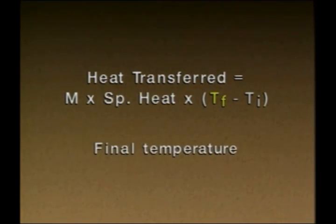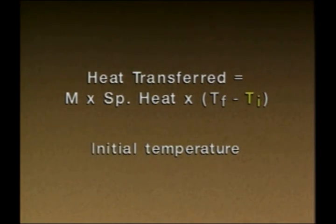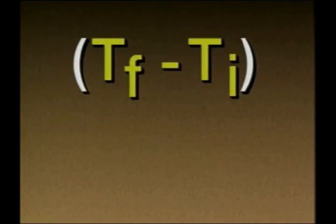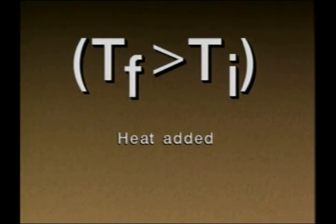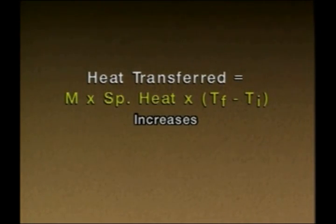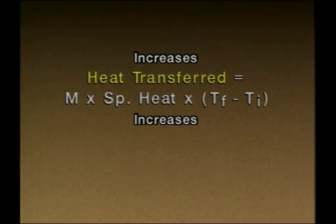The formula also includes the difference between the final temperature of the substance, Tf, and the initial temperature, Ti. The difference between the final and initial temperatures represents the temperature change. If the final temperature is greater than the initial temperature, heat was added to the substance; if the final temperature is less than the initial temperature, heat was removed. If any of these factors increases, the amount of heat transferred into or out of the substance also increases.